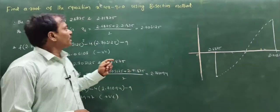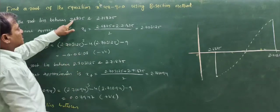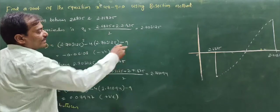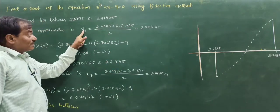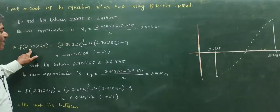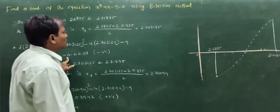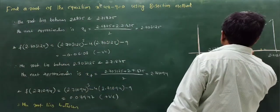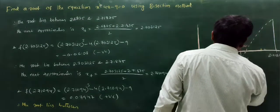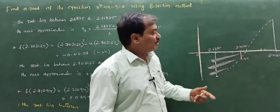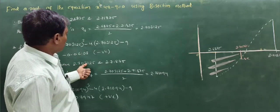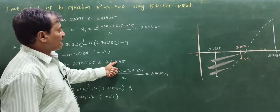The root lies between 2.6875 and 2.71875. Reconstructing the graph: at 2.6875 the function value is negative, at 2.71875 it is positive. The sixth approximation: x6 = (2.6875 + 2.71875) / 2 = 2.703125. The function value at this point is negative. Therefore the root lies between 2.703125 and 2.71875.